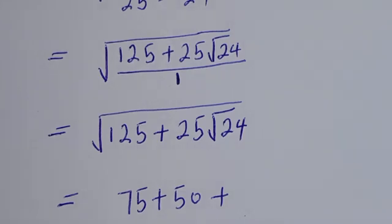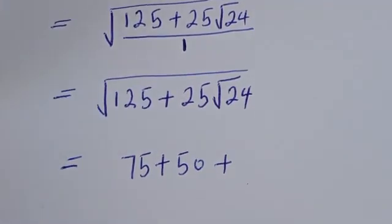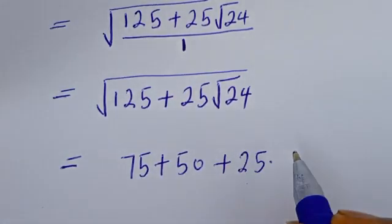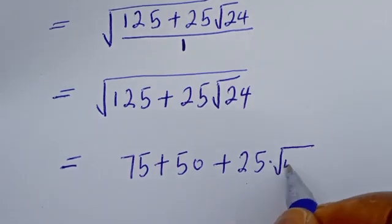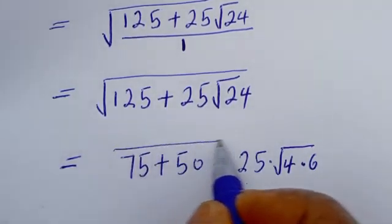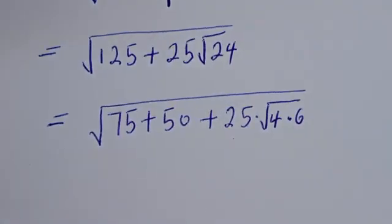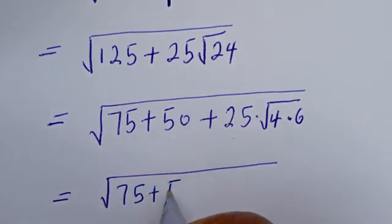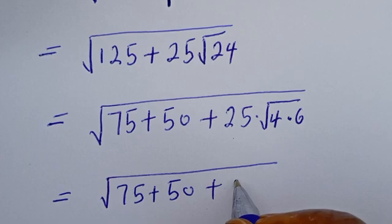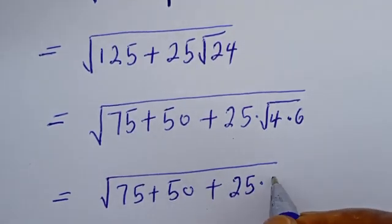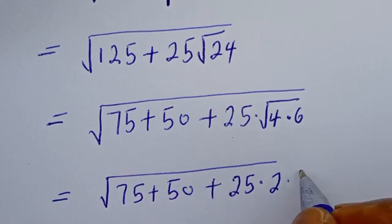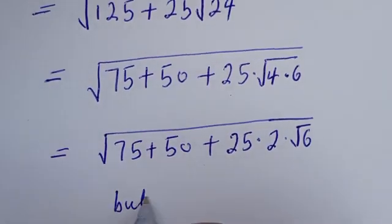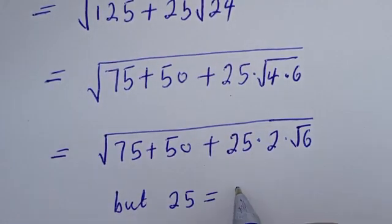Now, 125 can be written as 75 plus 50. Also, 25 root 24 can be rewritten since root 24 can be written as root 4 multiplied by root 6. So we have square root of 75 plus 50 plus 25 multiplied by 2 multiplied by root 6.